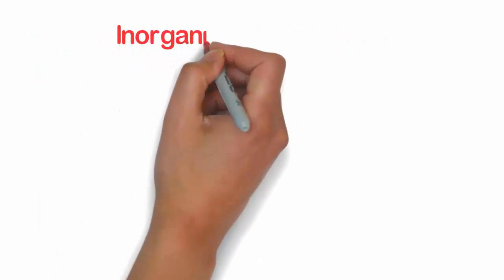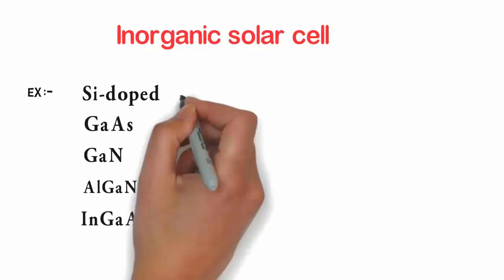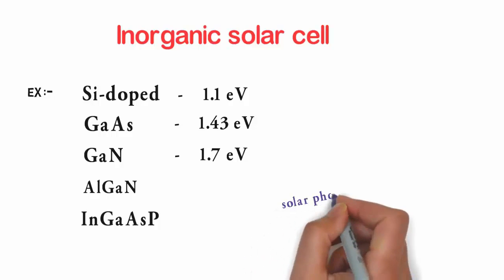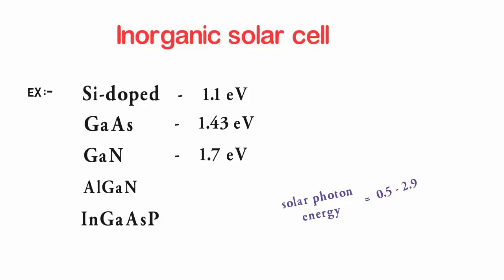Inorganic solar cells are mainly manufactured by the materials like silicon doped semiconductor, gallium arsenide or gallium nitride or AlGaN or InGaAsP. The value of band gap energy of these materials are like: for silicon doped semiconductor 1.1 eV, for gallium arsenide it is 1.43 eV, for gallium nitride it is 1.7 eV. For the conduction of solar photon, energy must be greater than the band gap energy of these materials so as to excite the electrons from valence band to conduction band. So the solar photon energy ranges from 0.5 to 2.9 eV.